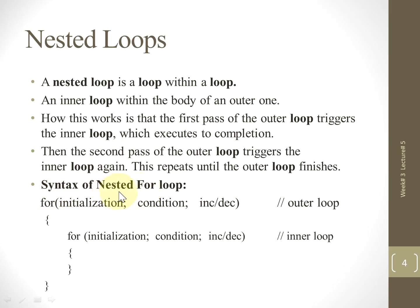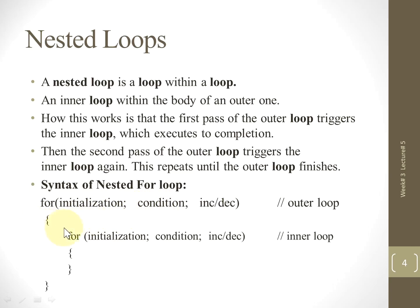It means we will have two loops — one loop will be in the body of the second loop. Let's see the syntax. Here we are introducing the nested loop using the for loop. First we have the outer loop, and within the outer loop we have a second for loop. First we initialize the outer loop, then check the condition.